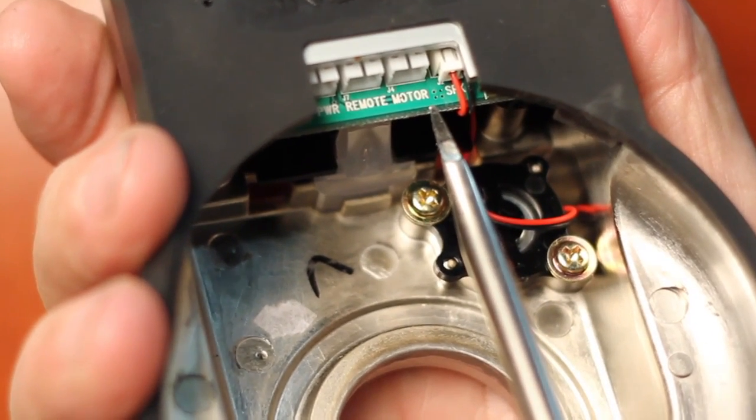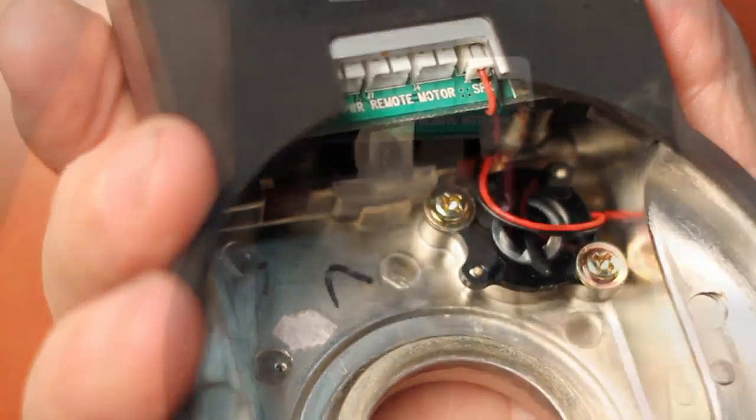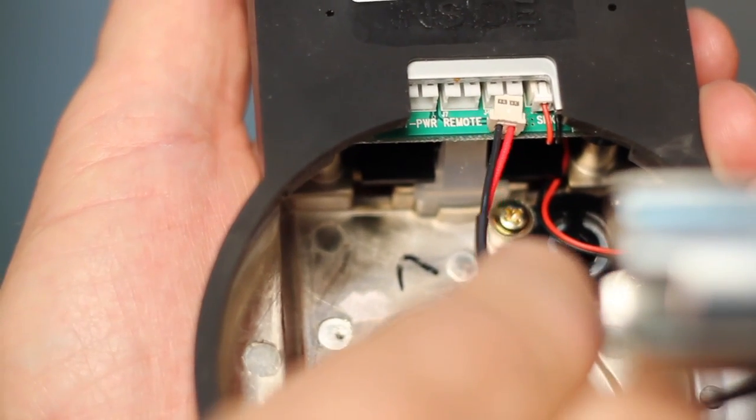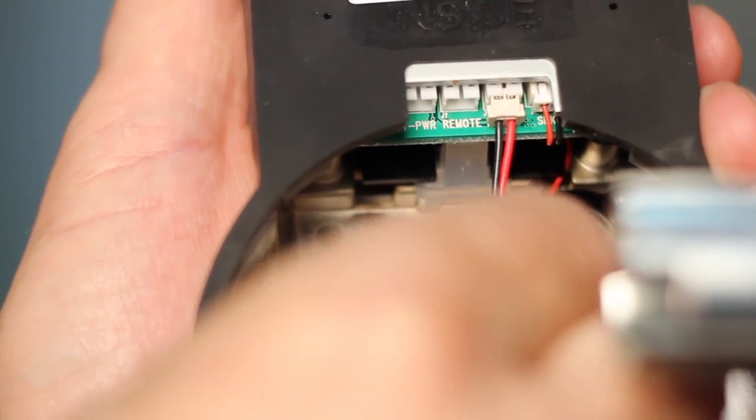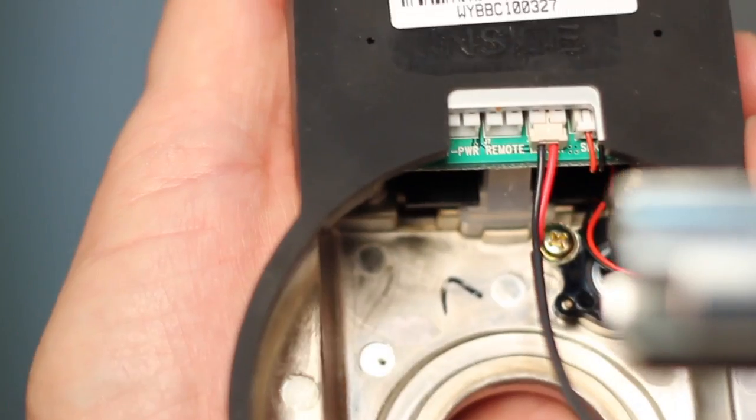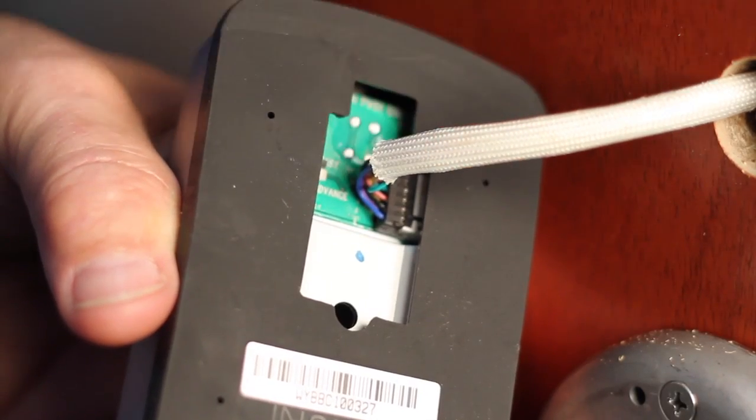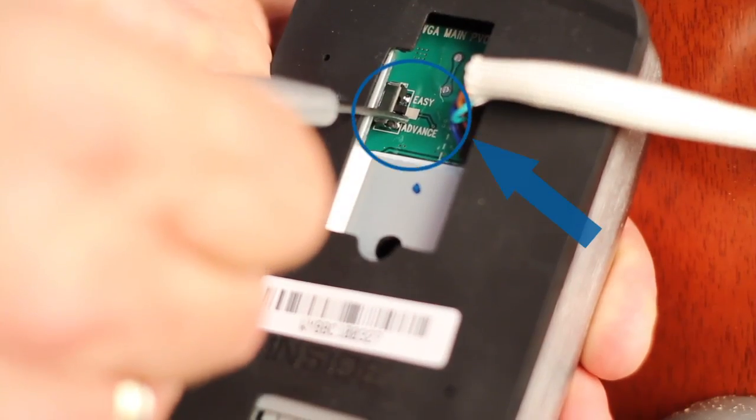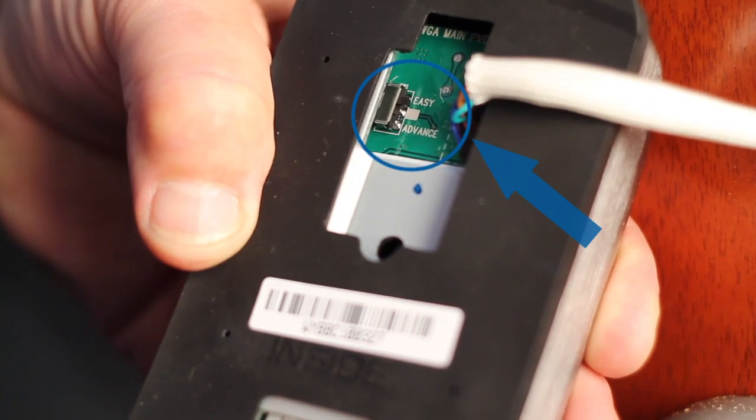Now attach the motor cable connector to the inside escutcheon PC board header marked motor. Attach the touchscreen connector cable to the inside escutcheon PC board header as shown. Select easy or advanced mode using the switch on the back of the PC board as shown.